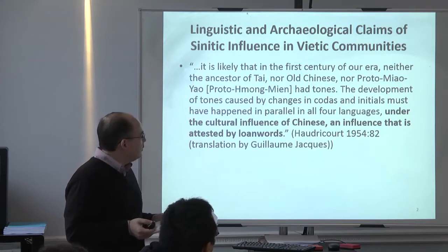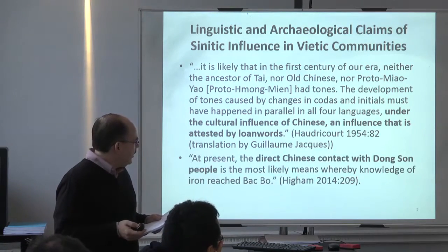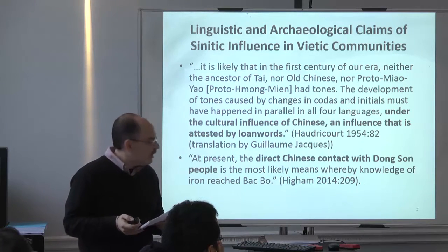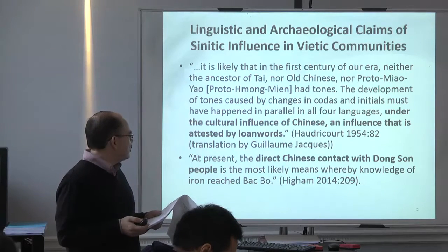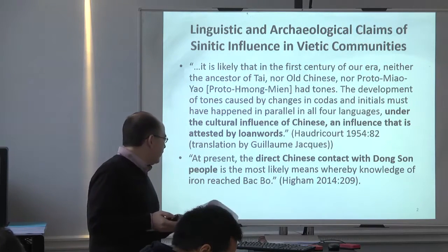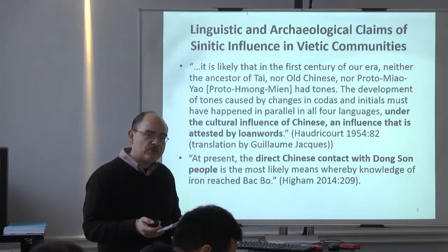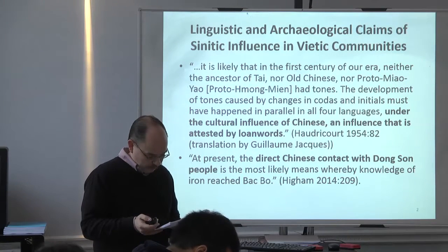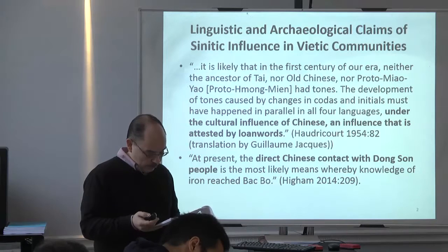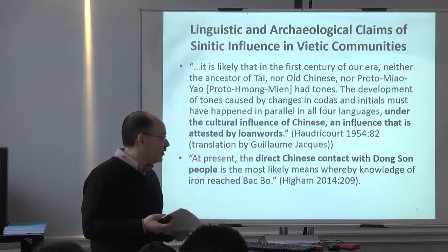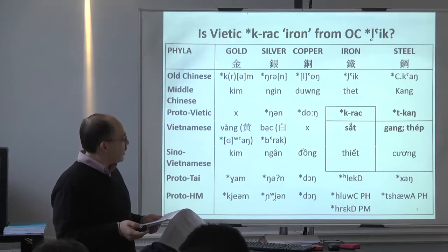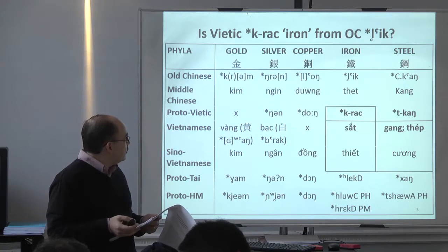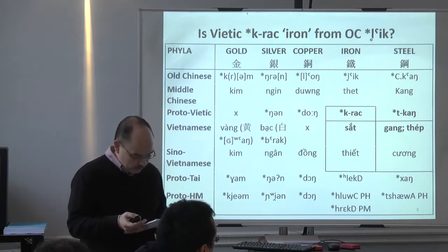Another side is Hagem — Charles Hagem is a top Southeast Asian archaeologist. He wrote: 'The direct Chinese contact with Dong Son people is the most likely means whereby knowledge of iron is reached.' Bac Bo is the northern region of Vietnam he's referring to. This could potentially benefit from the linguistic side of things — he wasn't looking at the linguistic side. So let's consider a sample of lexical evidence.